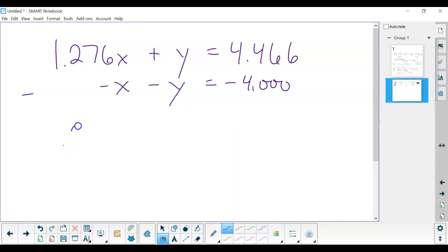Well, that gives us 0.276x equals—the y's cancel out—0.466. When you solve for x, you're going to end up with 1.69. Now remember, x was our grams of sodium chloride.